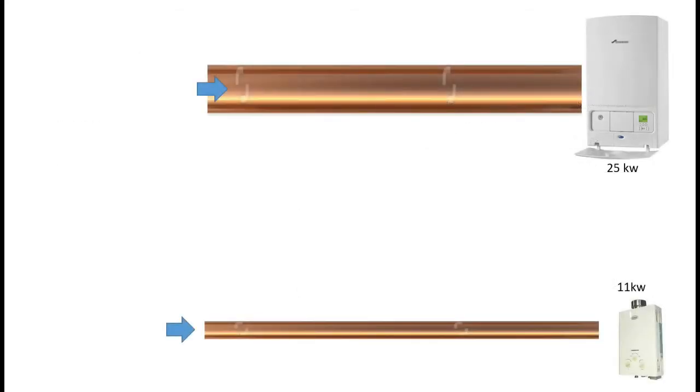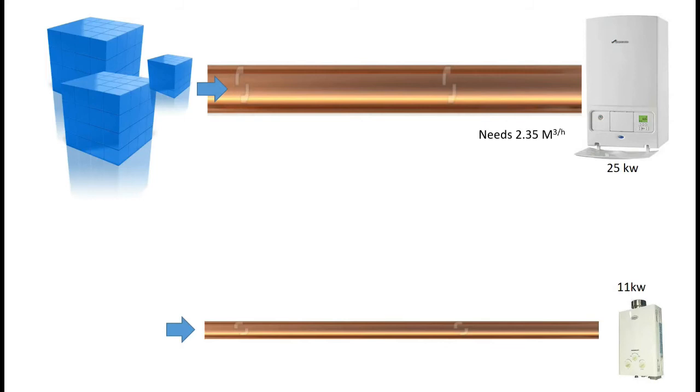Here we have a 25 kilowatt boiler and an 11 kilowatt water heater. The boiler requires 2.35 metres cubed per hour, that's 25 times 0.094, and the small water heater needs 1m³ per hour. That's 11 kilowatts times 0.094.